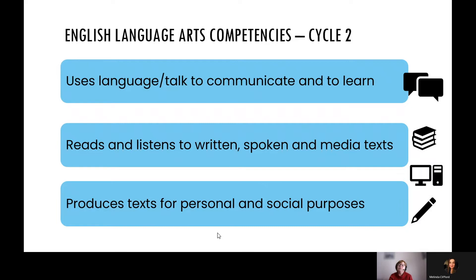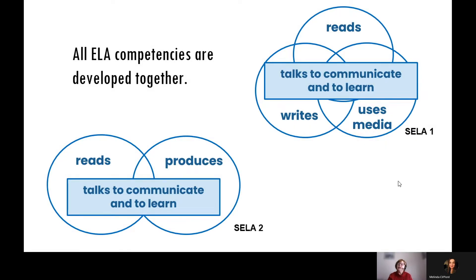In our Cycle 2 ELA program, we have three competencies — essentially the same as Cycle 1 but streamlined. Instead of a separate media competency, we have reading all kinds of texts, including media, and producing all kinds of texts. That leaves us with the talk competency using language to communicate and to learn, the reading competency, and the production and writing competency. The competencies are all interconnected, whether we're looking at Cycle 1 or Cycle 2. Talk is really at the heart of it all — an essential part of reading and writing in media, but they all work in synergy. Readers write and writers read. Media texts are read and produced, and that's why we often refer to ELA as an integrated program. We teach components together and we assess them together.